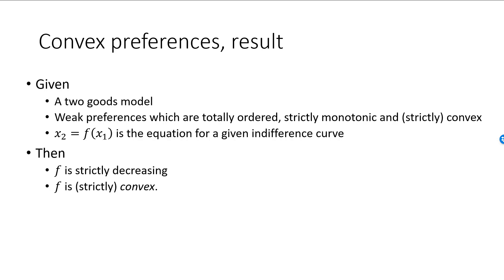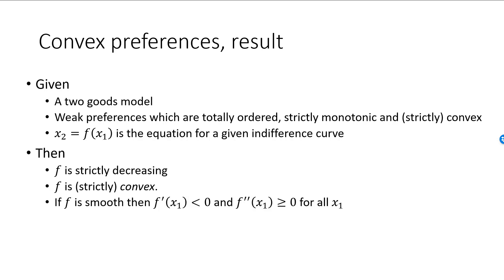We say that a function is smooth if its graph has no kinks — technically, a function is smooth if you can differentiate it any number of times. If f is smooth, which does not follow from our assumptions, then monotonicity implies that the derivative is strictly negative. Convexity implies that the second derivative is greater than or equal to zero. This means the indifference curve must slope downwards, and the slope will increase as we increase x1 — equivalently, the absolute value of the slope decreases as x1 increases, meaning the indifference curve becomes flatter as we move to the right.